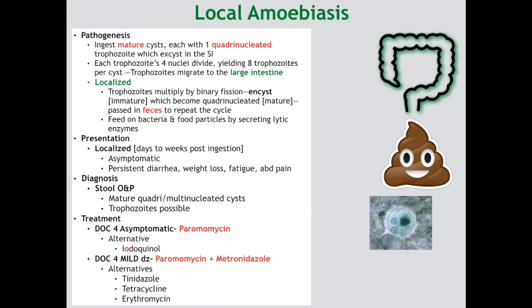Some other parasites to keep on your differential list: first would be Giardia, which is endemic to the United States and typically found among people who camp or hike. Second are your GIT sporozoans — Cyclospora, Cryptosporidium, and Cystoisospora belli — which are typically found in HIV/AIDS patients. And finally, your GIT helminths, especially the cestodes (tapeworms) and GIT nematodes (roundworms).